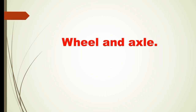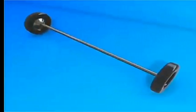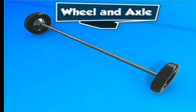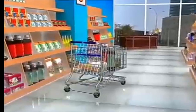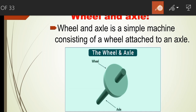Next topic is wheel and axle. In a supermarket, we collect things in a shopping cart, which consists of wheels joined together with the help of a rod called an axle. This wheel and axle together make a simple machine. Wheel and axle is a simple machine consisting of a wheel attached to an axle. This rod is called the axle and the wheel is attached to this axle. This arrangement is called wheel and axle, and they are synchronized — meaning they work at the same rate. When we rotate the wheel, the axle rotates at the same time, and vice versa.